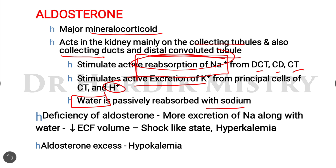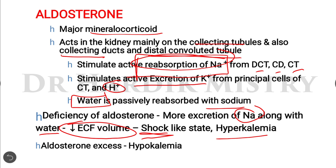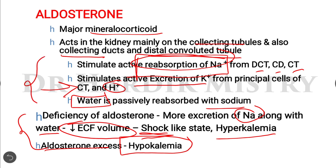In aldosterone deficiency, there is more excretion of sodium along with water, decreasing extracellular fluid volume, causing conditions like shock, dehydration, and hyperkalemia — since potassium excretion is not possible without aldosterone. In aldosterone excess, hypokalemia occurs due to excessive excretion of potassium from principal cells of the collecting tubule.